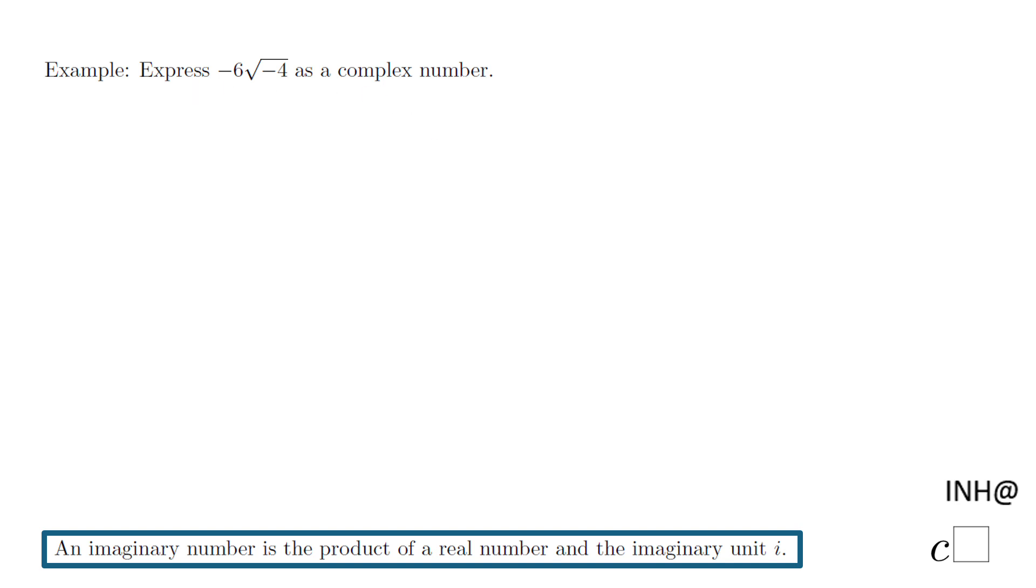Welcome or welcome back at C squared. In this example we're going to express this number as a complex number. You notice here we have negative 6 and the problem is we have the square root of negative 4. We cannot take the square root of negative 4. If you get a calculator and put that in, you're going to get an error.